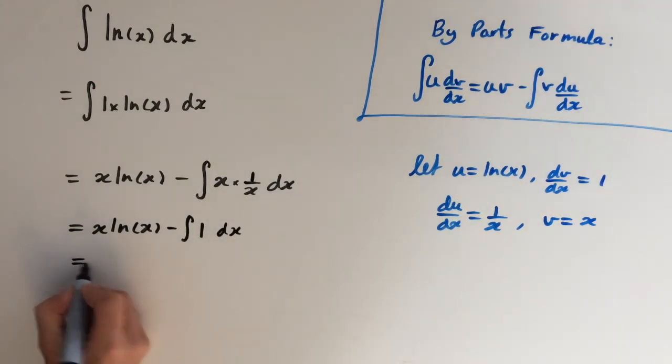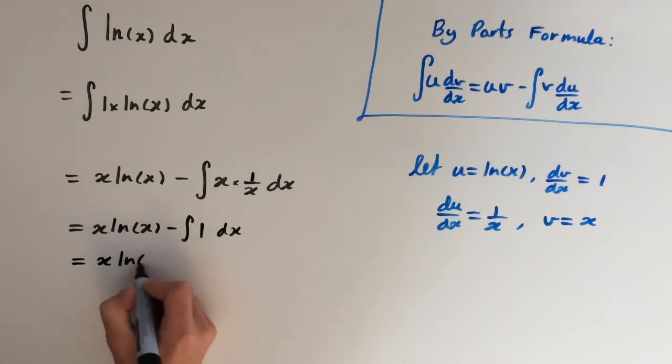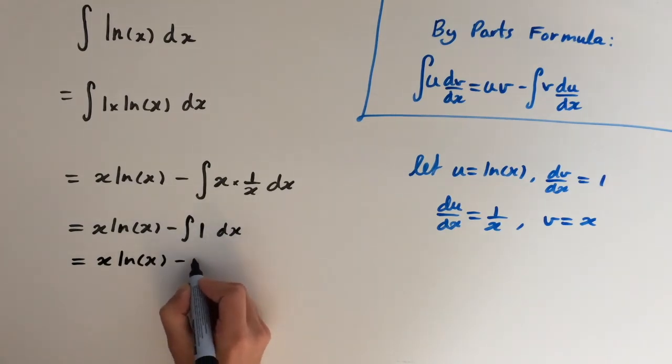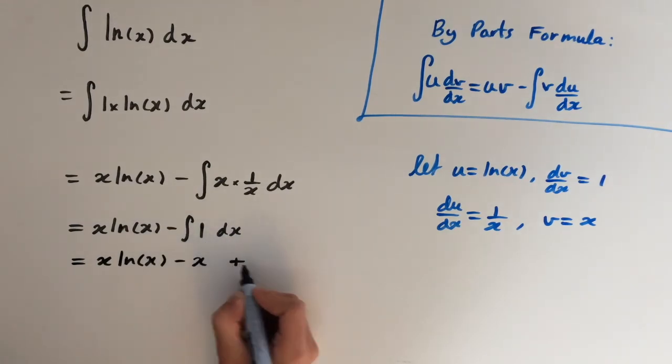So this is quite simple now. x ln(x) minus integral of 1 is just x so minus x plus c.